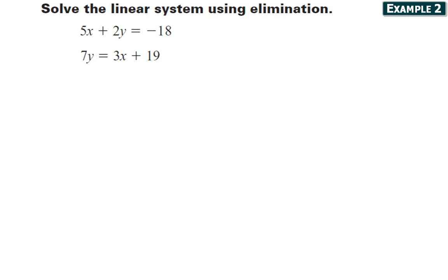Let's look at another example. In this case, the second equation is not set up like the first. The first has the x and y terms both on the left side. So I'm going to do a little bit of work to make the second equation the same way. I'm going to subtract 3x from both sides. And now equation 2 says negative 3x plus 7y equals 19.